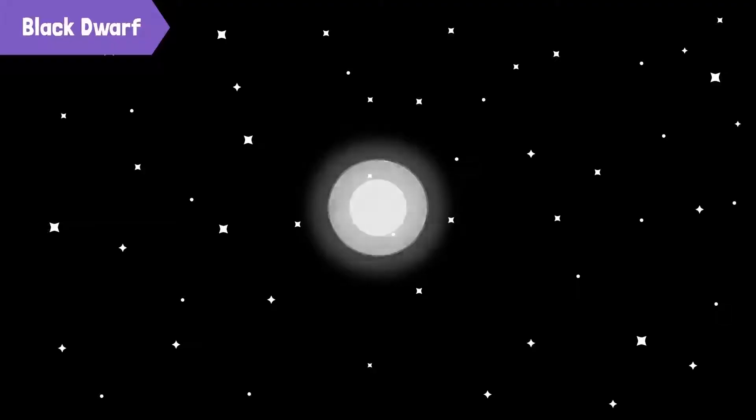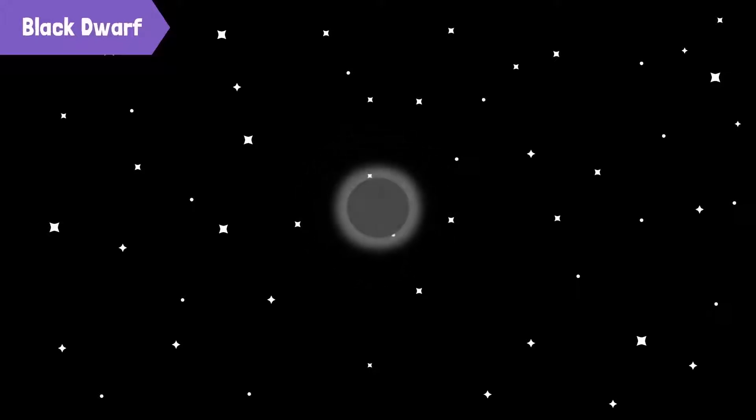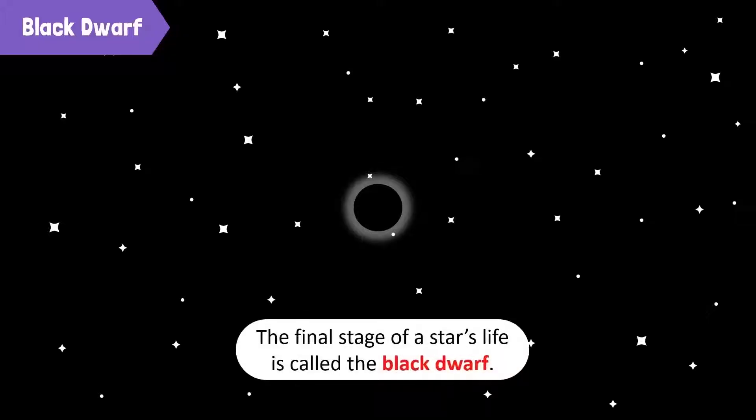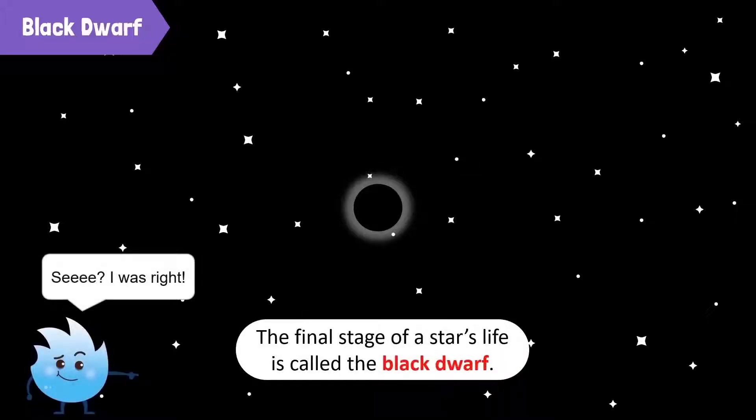Eventually, the star will become a burned-out chunk of very dense matter, which does not emit light. This final stage of a star is called the black dwarf. See, I was right. Not so fast, Spiky.